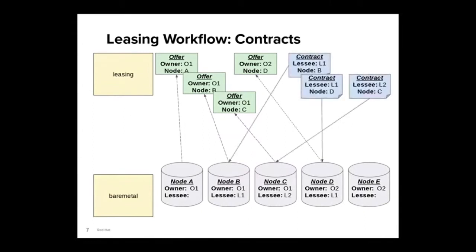Now the lessees come into play. Lessee L1 wants to use two nodes, so they look at the available offers and create a contract for nodes B and D. Lessee L2 only needs one node, so they create a contract for node C. No one creates a contract for node A, so another lessee can take it. And no one can create a contract for node E, since it was never offered up in the leasing service.